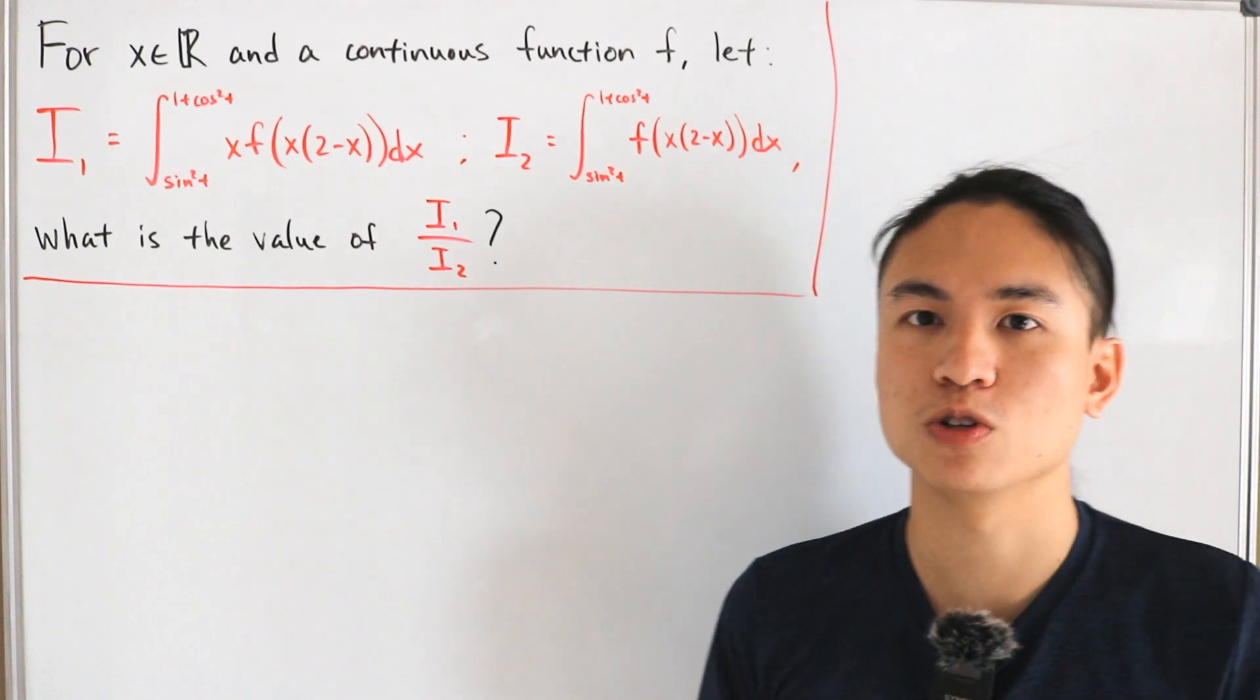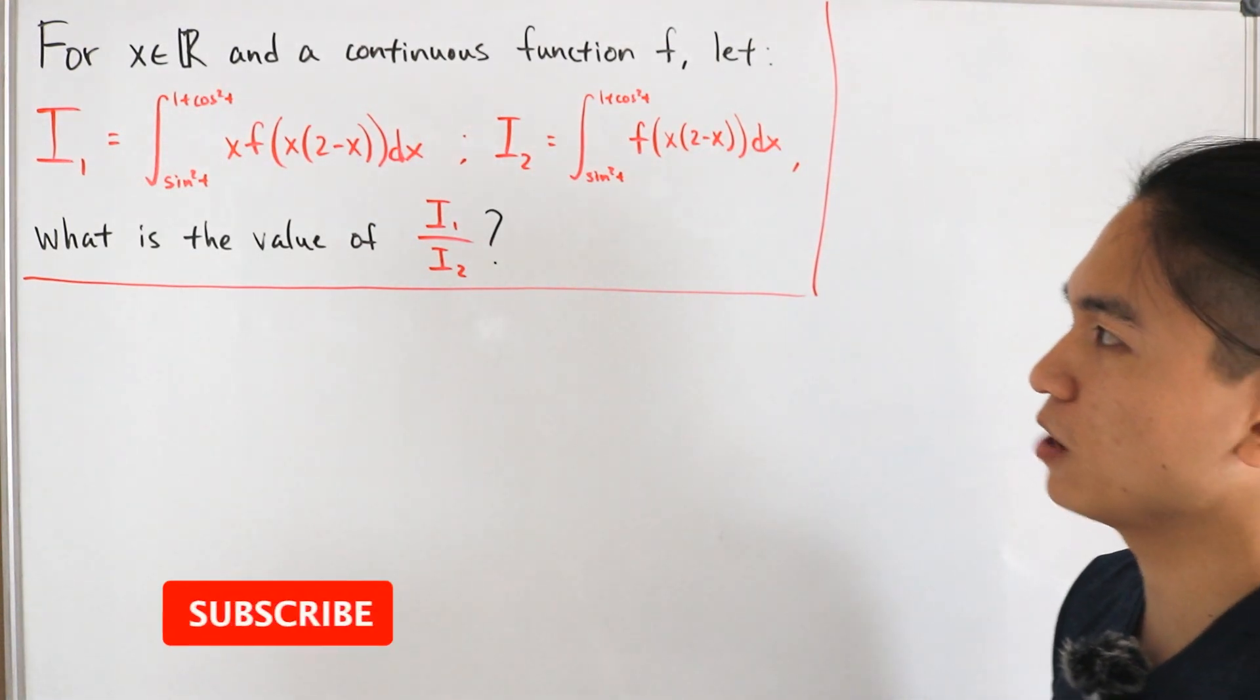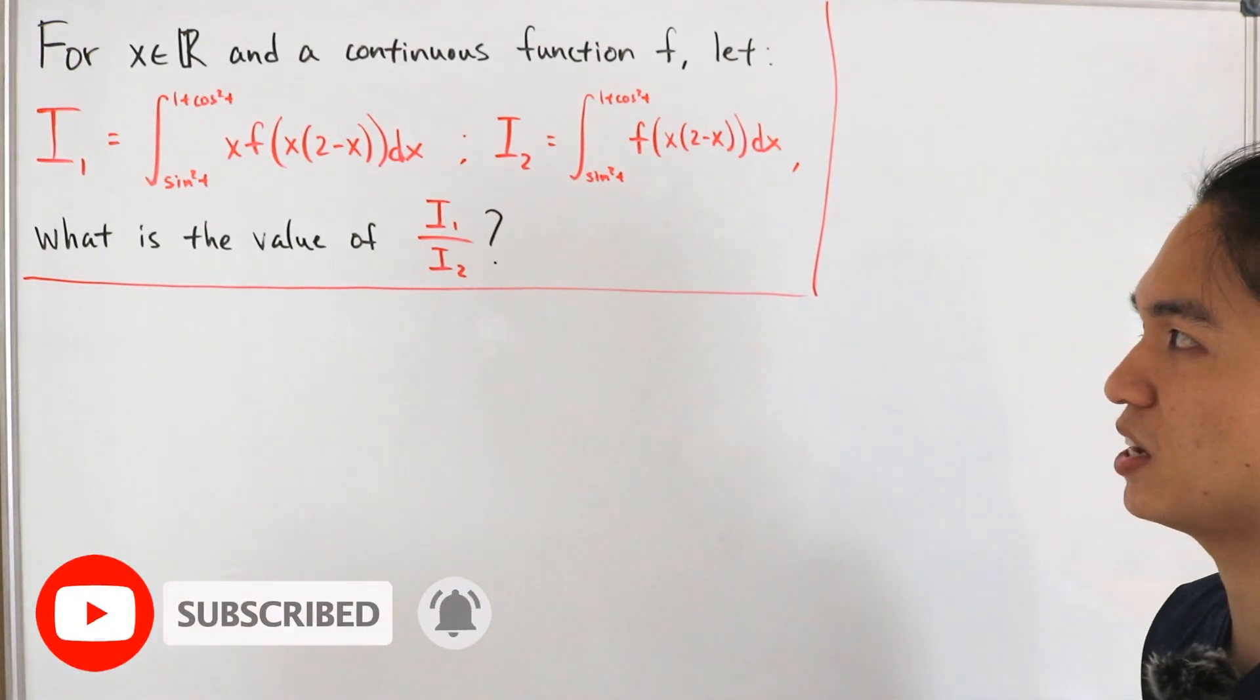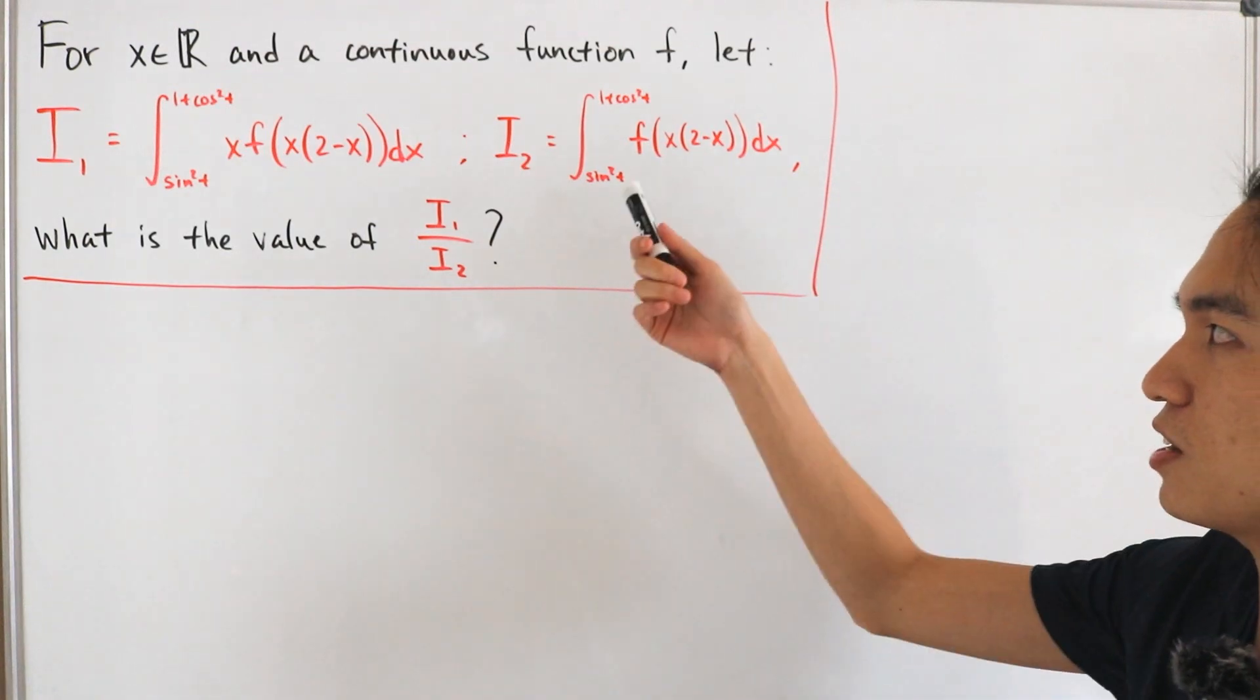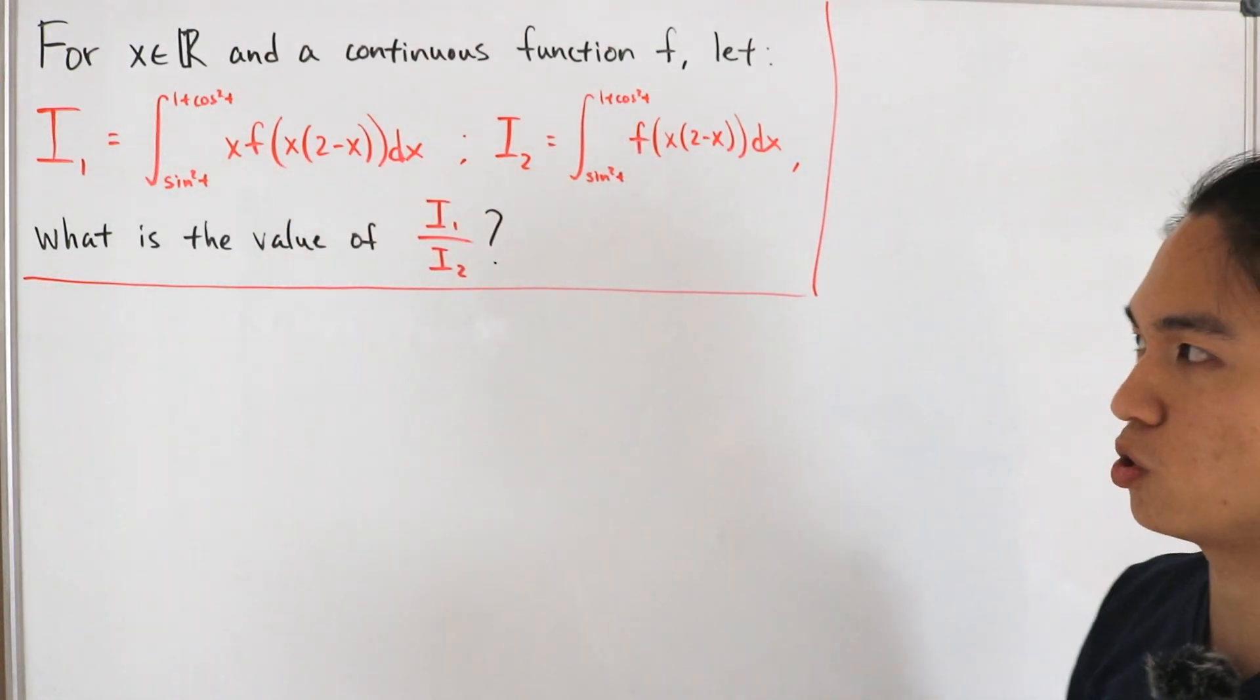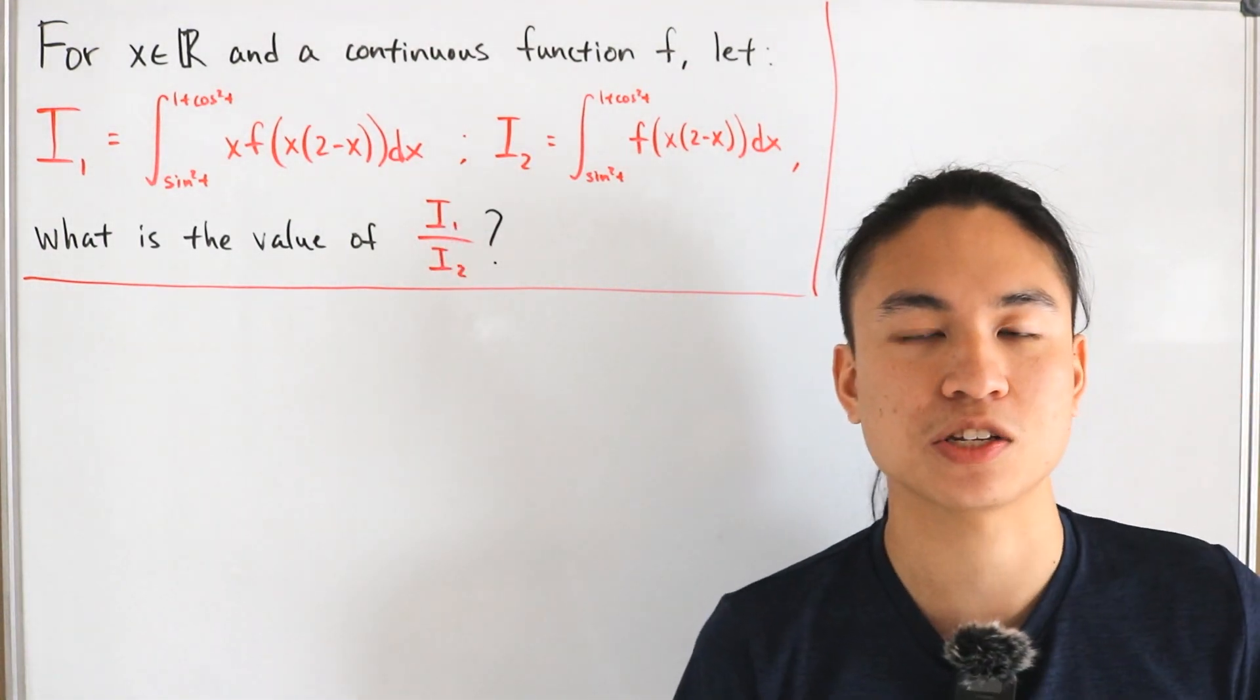suppose that we're given two different types of integrals. So we have i sub 1 equals the bounds from sine squared t to 1 plus cosine squared t of x times f of x times 2 minus x dx, and then the second one is the exact same thing just excluding the x from the side. So what we want to know is what is the value of i sub 1 divided by i sub 2.